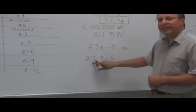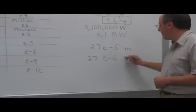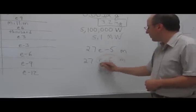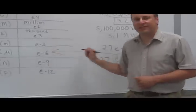So it would be 27 millionths of a meter. So that would be 27 micrometers, micro meaning e to the negative 6th.